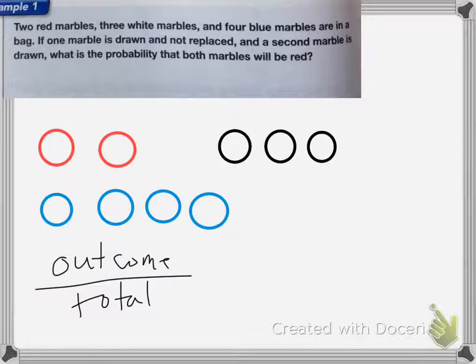If one marble is drawn and not replaced, and then a second marble is drawn, what is the probability that both marbles will be red? So the second draw is dependent on the first one.